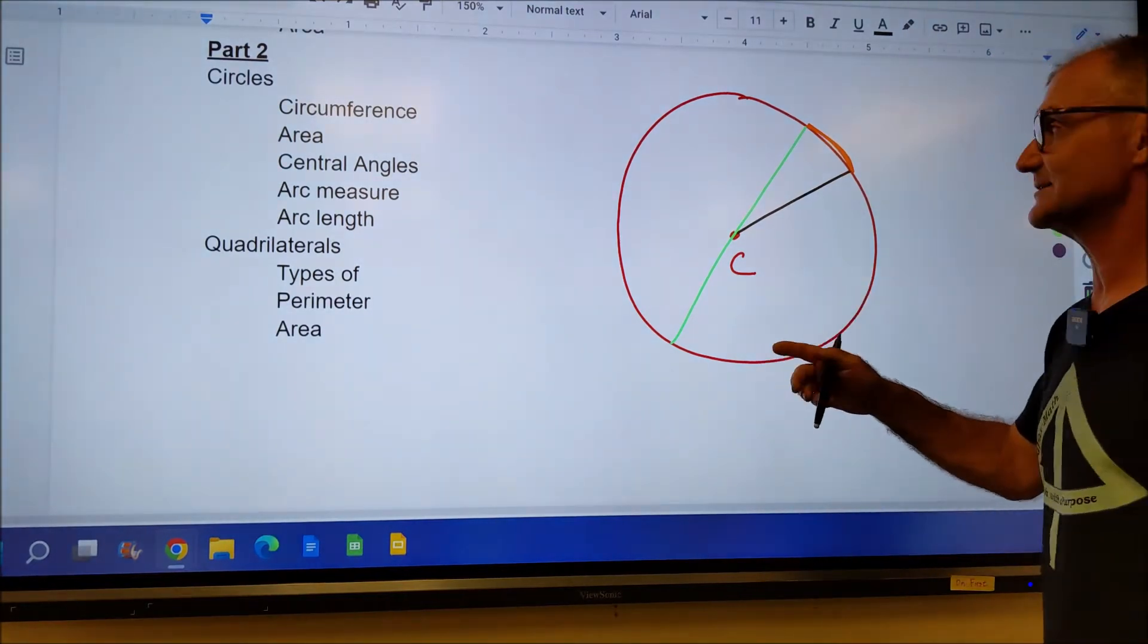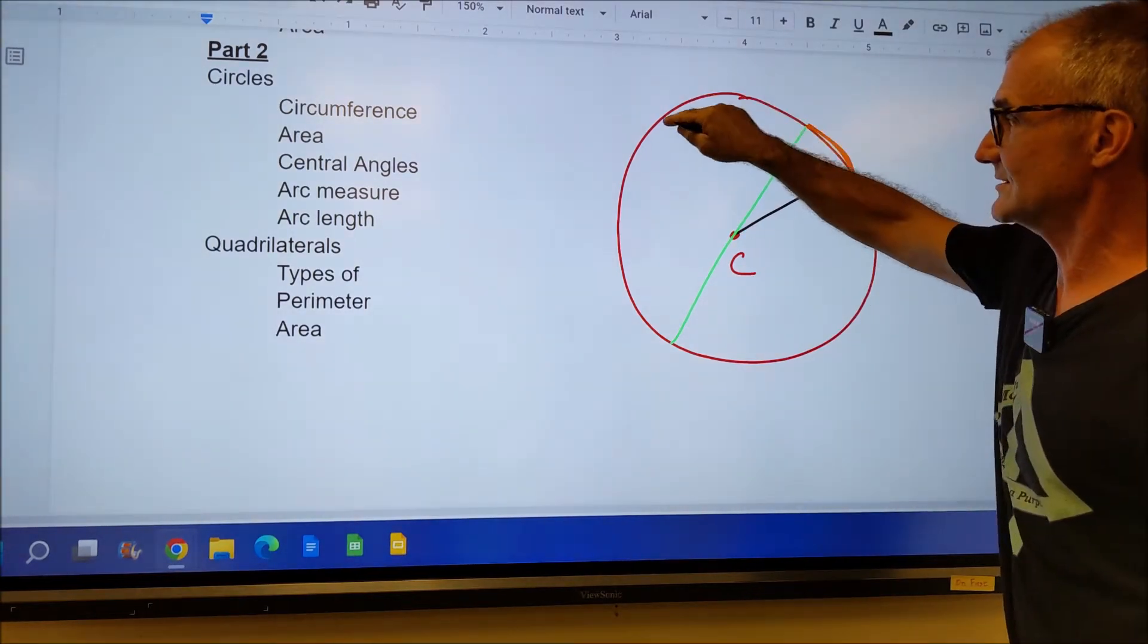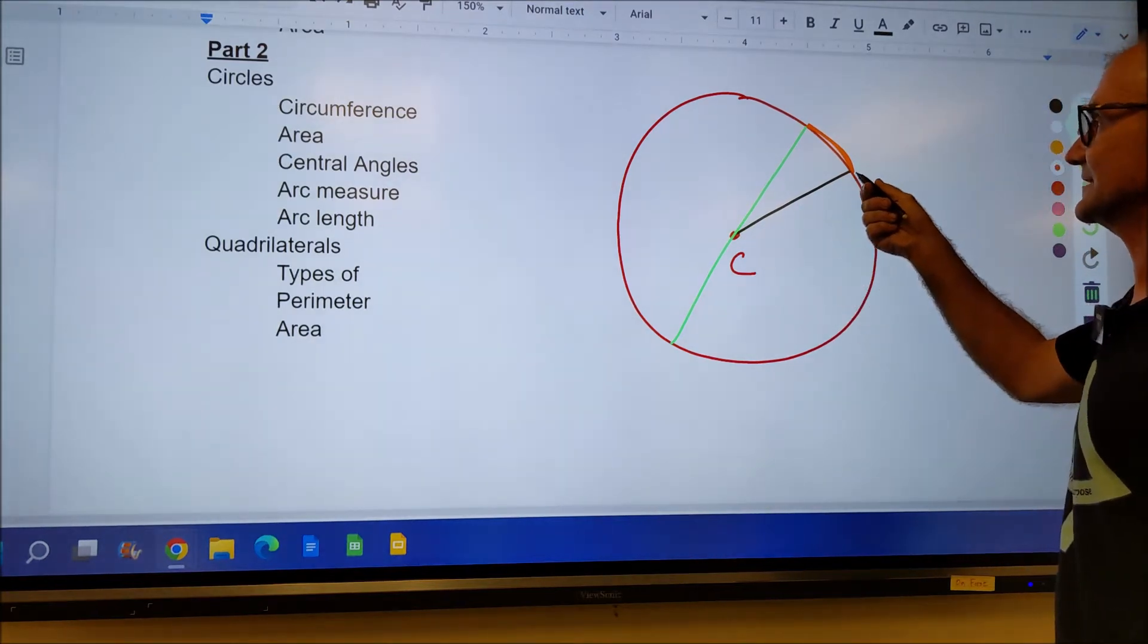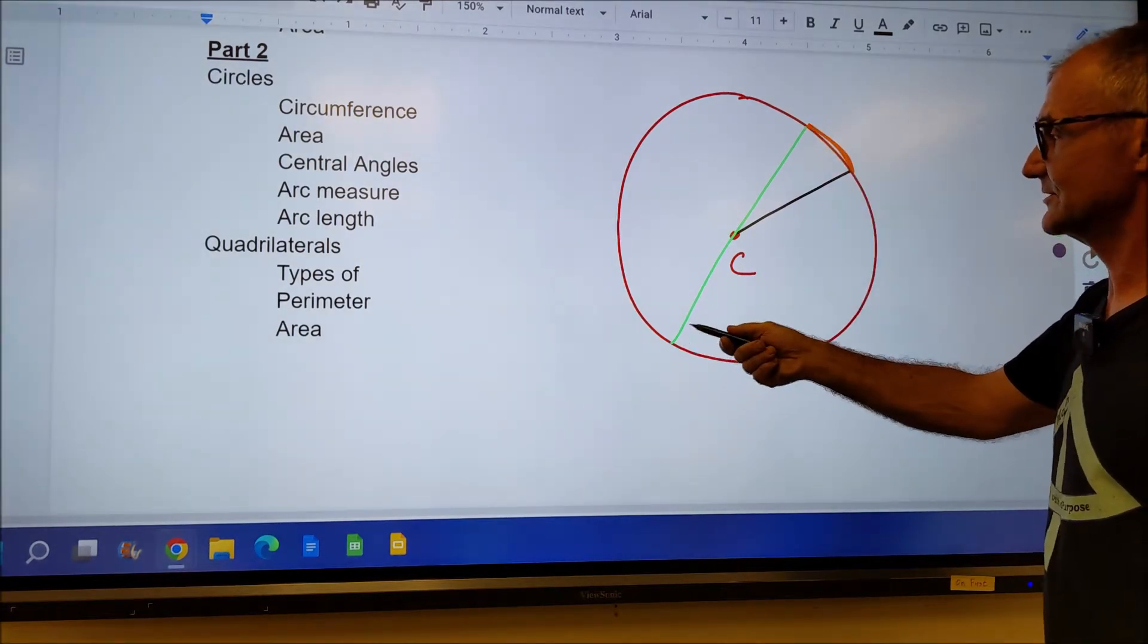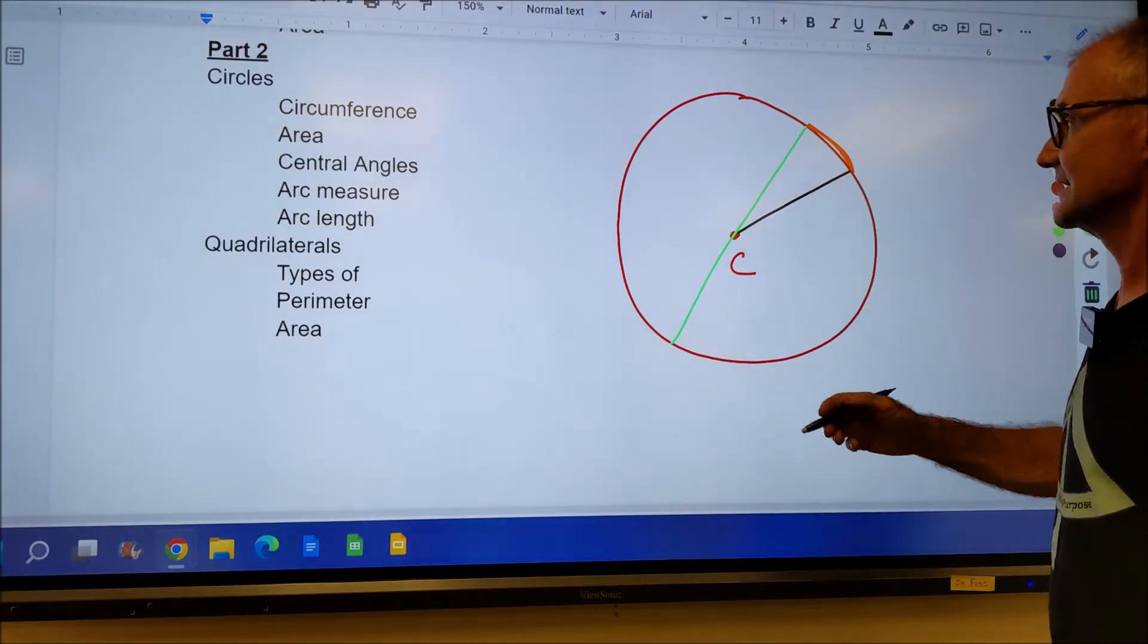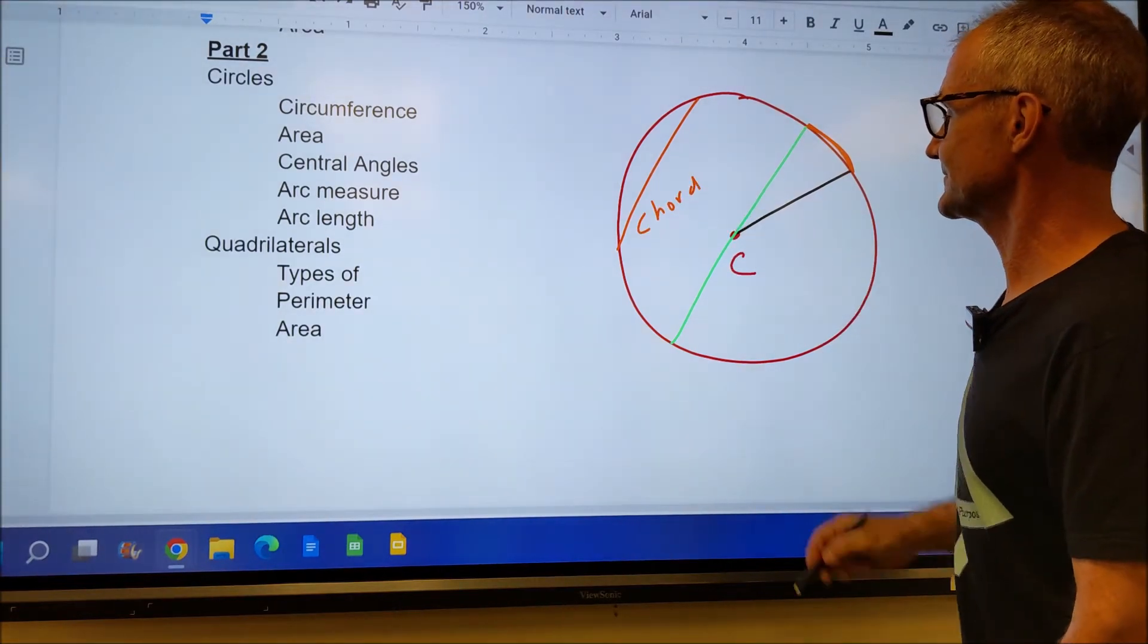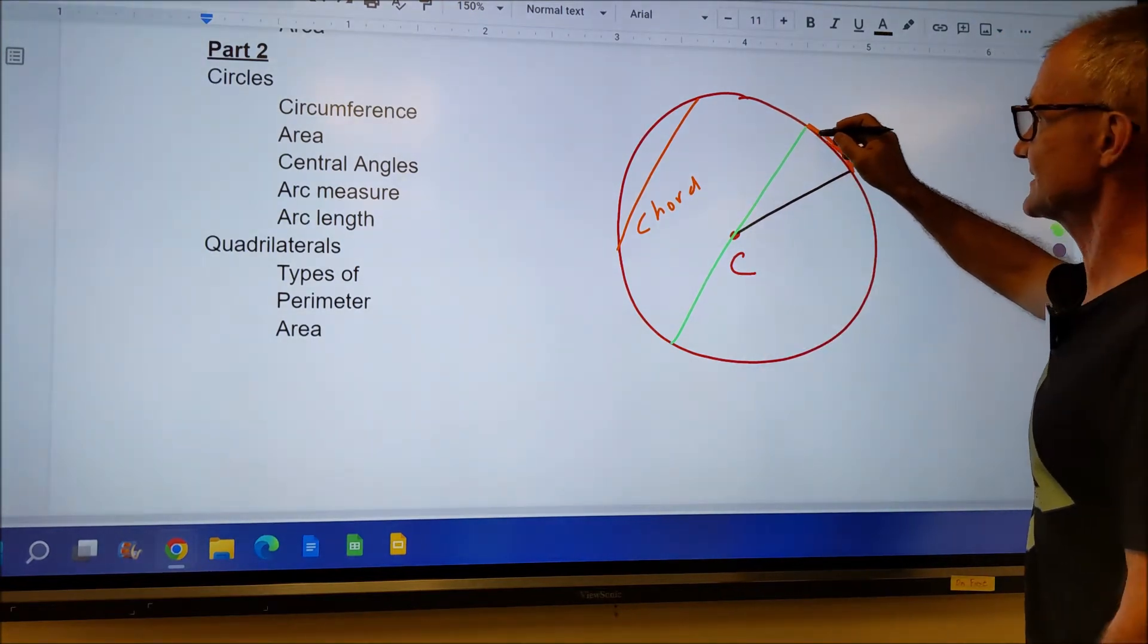A circle is defined as all points equal distant from a point. So this is a circle centered at point C. The line from the center of the circle to anywhere on the outside is called a radius. The line anywhere across the circle going through the center is called the diameter. So the diameter is always twice the radius. If I have another line that does not go through the center of the circle, that is called a chord. And then the outside all the way around the circle is the circumference, and a piece of that is called an arc.